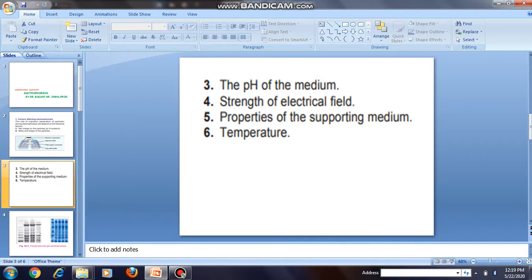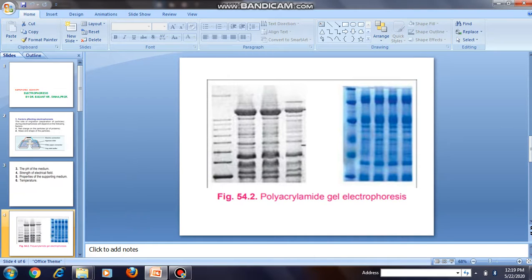When electrophoresis is carried out, the buffer is chosen in such a way as to ensure effective separation of the mixture of protein. For example, serum proteins are separated at a pH of 8.6. At pH of 8.6, all serum proteins have a net negative charge and will migrate towards the anode.